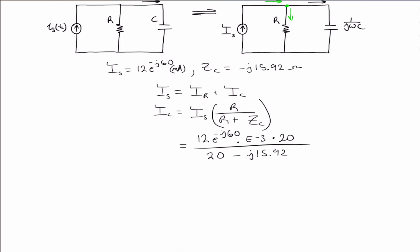So we can simplify this by division. We convert the denominator into polar form. So the numerator is going to equal 0.24 times the complex exponential e to the minus j 60.